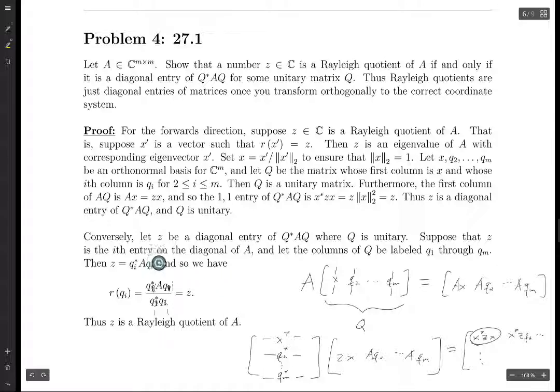So QI star AQI over QI star QI. And so on top, we have QI star AQI, which we just proved to Z. And on bottom, we have QI star QI, which is the two-norm of QI squared. But because QI through QM is an orthonormal basis, we know that that's going to be 1. So this is just Z over 1, which is Z.